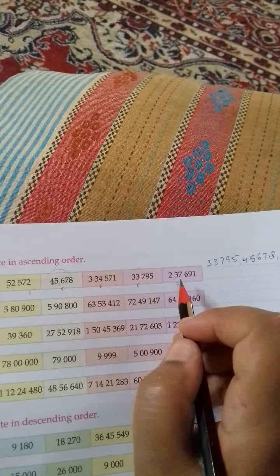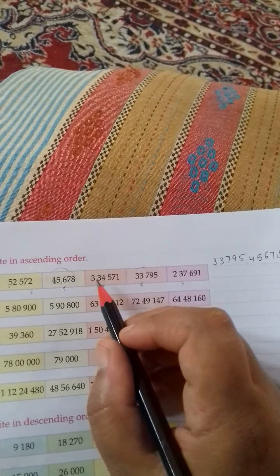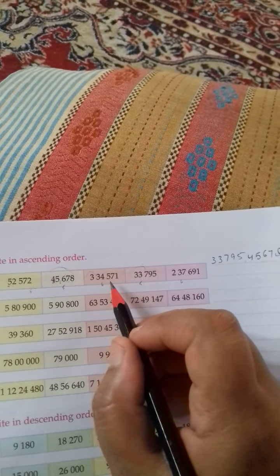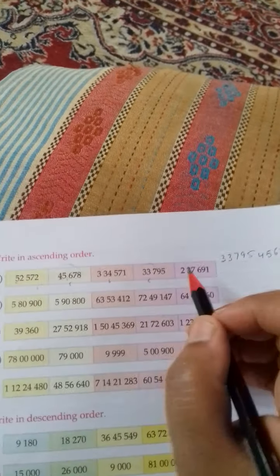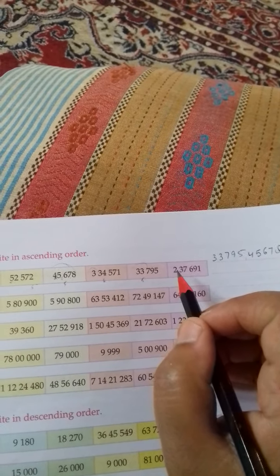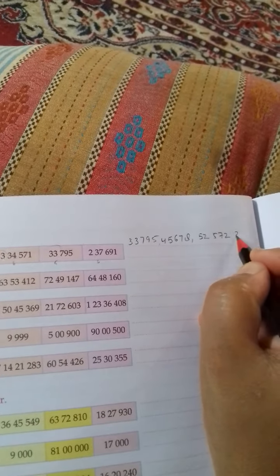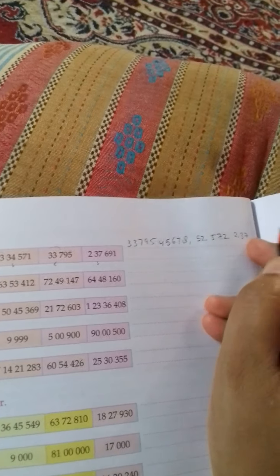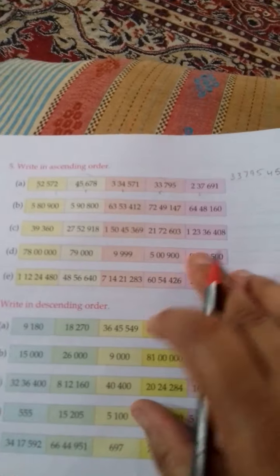Now 2 numbers are left having 6 digits each. So let's compare them now. It is having 3 in the starting, at the lakh's place. And it is 2 at lakh's place in this number, so this is smaller. First you will write this one: 2, 3, 7, 6, 9, 1. And lastly we will write this one: 3, 3, 4, 5, 7, 1. So like this you are going to do this exercise.